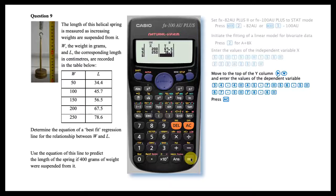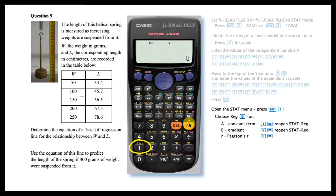Press AC to finalize the data entry process. To obtain the coefficients of the linear regression, open the stat menu by pressing shift then 1.